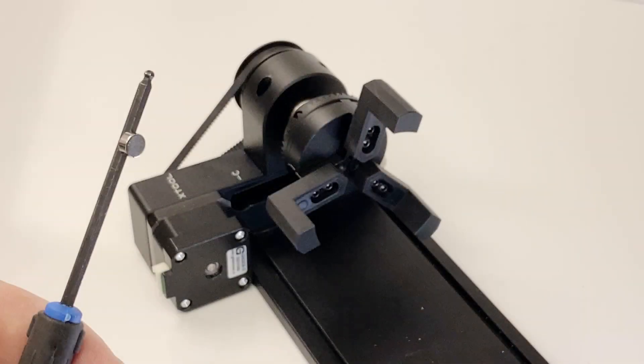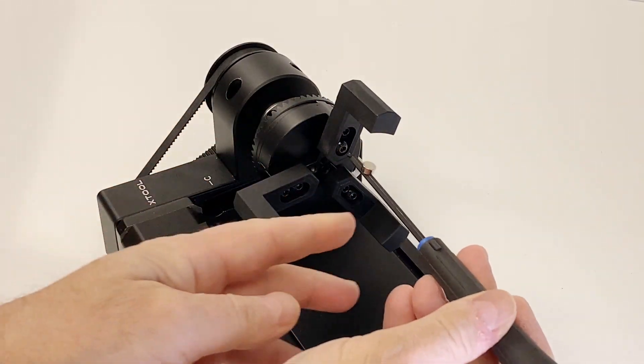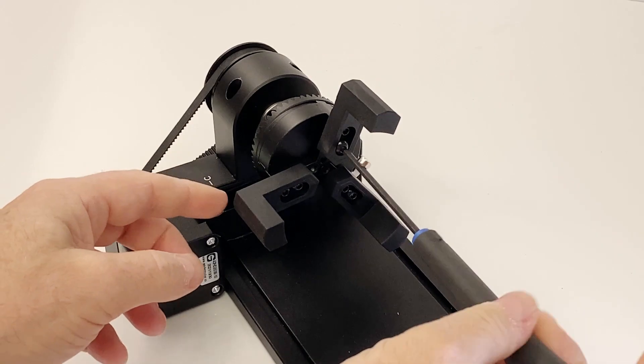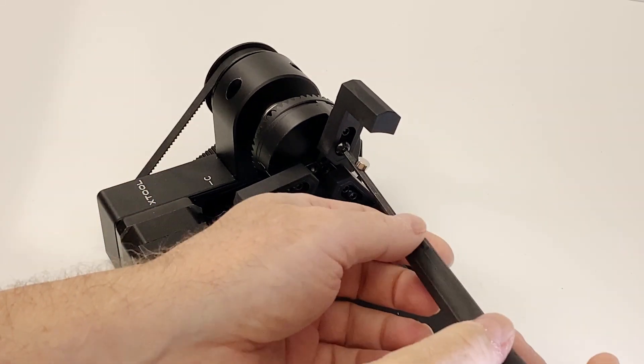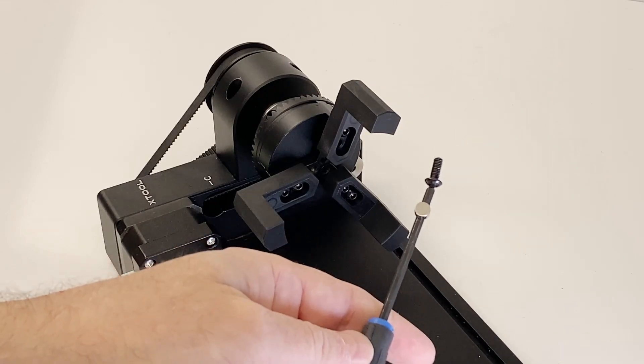And to make it even easier, my next tip is to take a small high-powered magnet and attach it to the shaft of the screwdriver. Because the screws are steel, the magnet will hold the screws onto the tip of the screwdriver, making it even easier to wrangle these little screws.